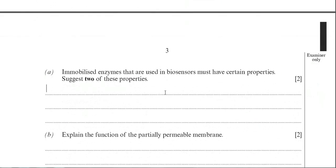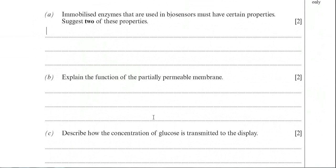And the first question is asking, immobilised enzymes that are used in biosensors must have certain properties. State two of these properties. So this shouldn't be too difficult now. We've covered these properties and advantages of immobilised enzymes quite a lot through these questions. Basically the immobilised enzymes must be stable or can be stable at higher temperatures or a greater range of pHs.